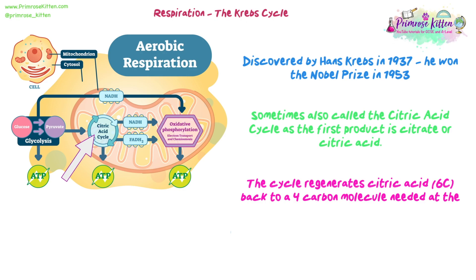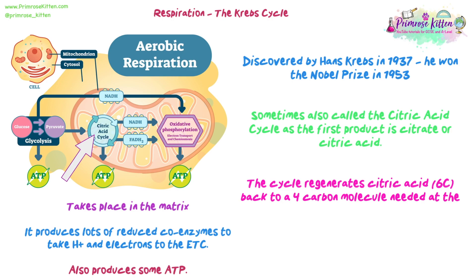So it's very similar to when we looked at the Calvin cycle — we've got a cycle, we've got something being regenerated at the end. And ultimately, the point of this is not to produce lots of ATP, but to produce a lot of reduced coenzymes that we're going to send to the electron transport chain, and they will end up helping us produce lots of ATP. It takes place in the matrix, just like the link reaction, and it's one of the two stages that take place in the matrix. The last stage we'll look at in the next video will take place in the actual membrane itself.